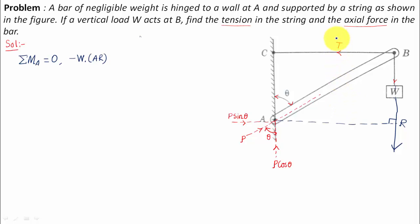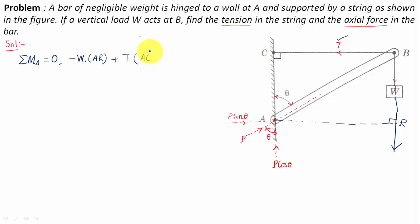Now for force T — keeping the thumb at A and moving the finger along the direction of T, this force produces an anti-clockwise moment, so we use a positive sign: positive T times AC, where AC is the perpendicular distance from A to the line of action of T. The forces P sine theta and P cosine theta both pass through point A, so their moments about A are zero.